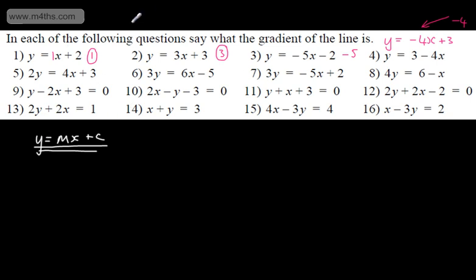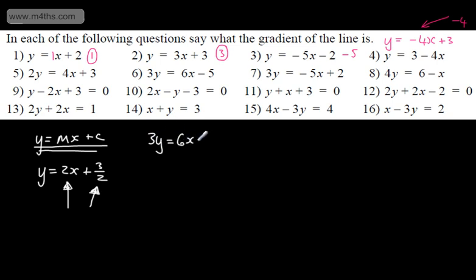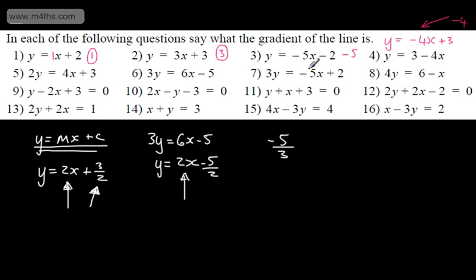We need to be careful when the equation isn't in the form y = mx + c. For example, 3 - 4x can be rewritten as -4x + 3, giving a gradient of -4 — a common misconception is that the gradient is 3. For 2y = 4x + 3, divide both sides by 2 to get y = 2x + 3/2: gradient positive 2, y-intercept 3/2. For 3y = 6x - 5, dividing by 3 gives y = 2x - 5/3: gradient positive 2.